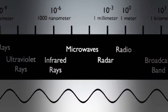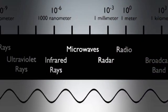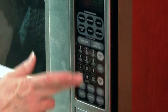After radio waves come microwaves, which produce more energy due to shorter wavelengths and higher frequencies. Cell phones, radar, and microwave ovens use microwaves.